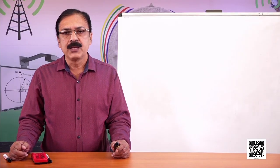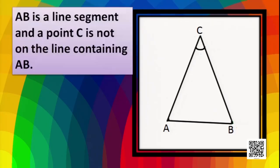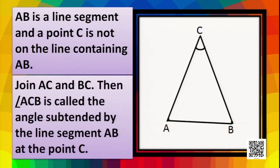Let's look at this figure. Here AB is a line segment and a point C is not on the line containing AB. If we join AC and BC, then we get angle ACB. So angle ACB is called the angle subtended by the line segment AB at point C.